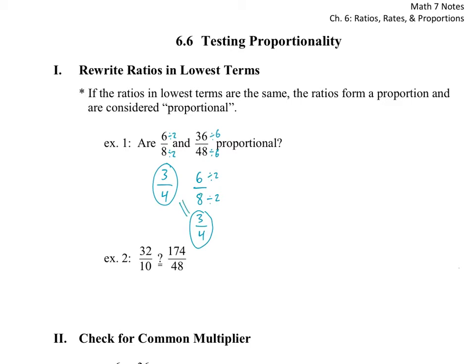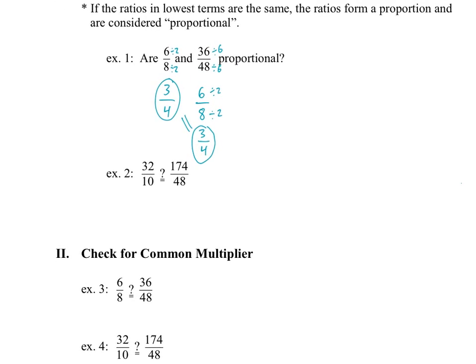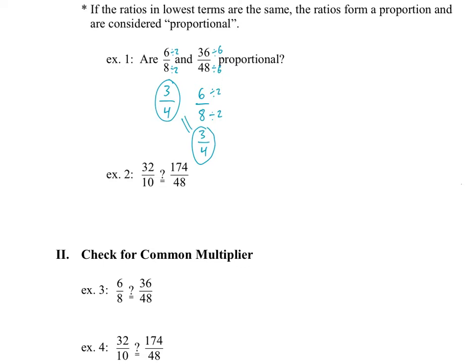Since both fractions reduce to the same value, they must be equal — they form a proportion and are proportional. For Example 2, the book uses a 'does it equal' notation. I'll reduce 32/10 by dividing both by 2: half of 32 is 16, half of 10 is 5. Since 5 is only divisible by 1 and 5, that's as far as it goes, giving 16/5.